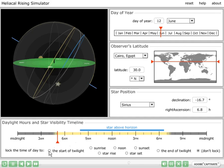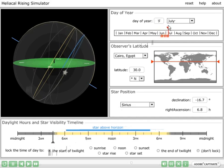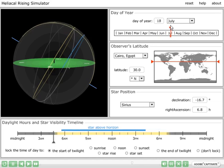So let me lock time now to the start of twilight, and let's again move the date forward, and we see that Sirius is getting closer to the eastern horizon at the time of twilight's starting.